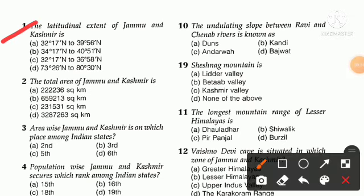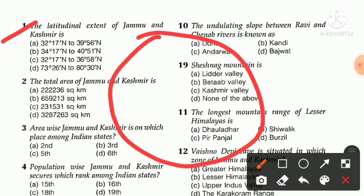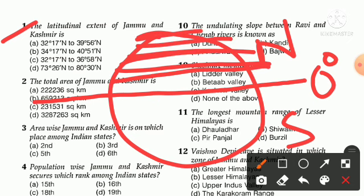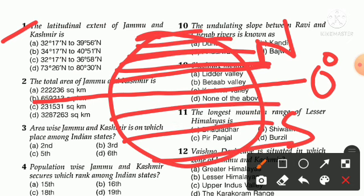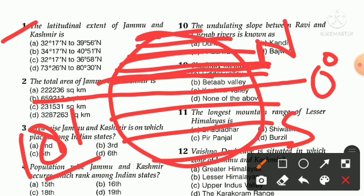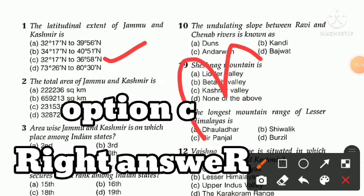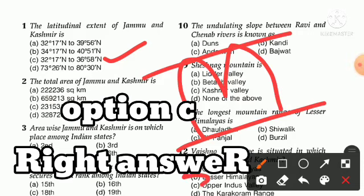Question number one is: what is the latitudinal extent of Jammu and Kashmir? First we have to know what latitudes are. If we look at the equator, it is a horizontal line — zero degrees. After that, the northern hemisphere and southern hemisphere. We draw parallel latitudes — 90 on each side, total 181 latitudes. The latitudinal extent of Jammu and Kashmir — option C is the right answer — that is from 32 degrees 17 minutes north.